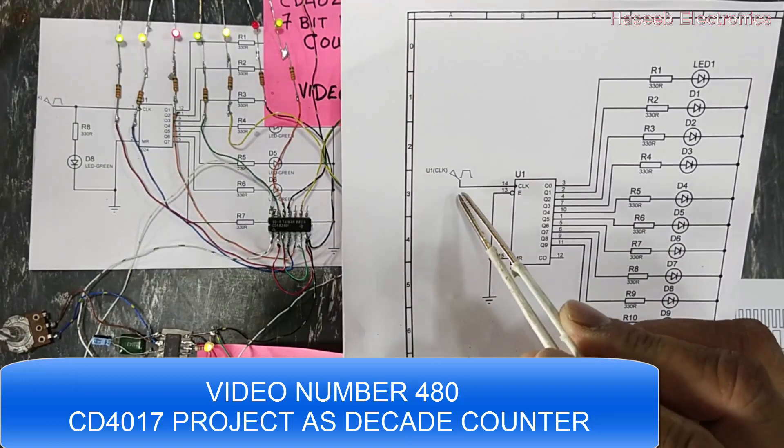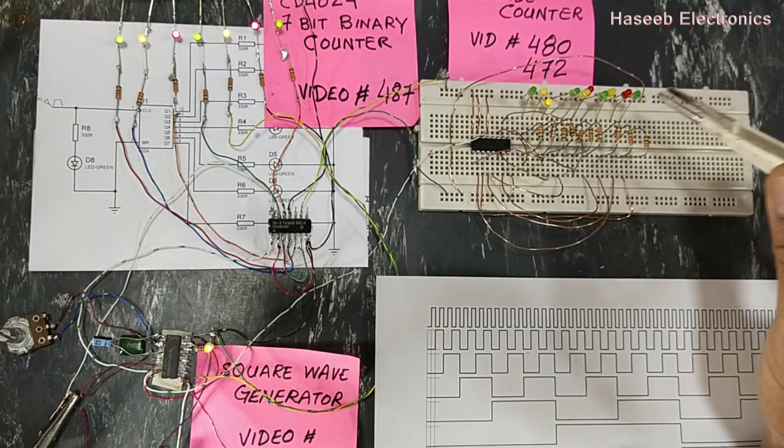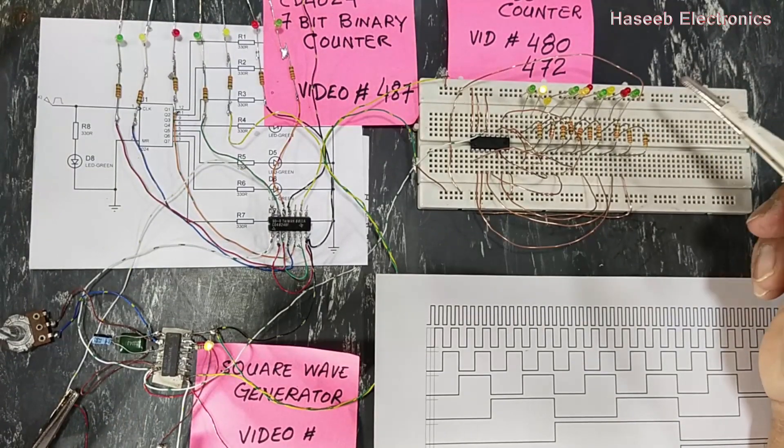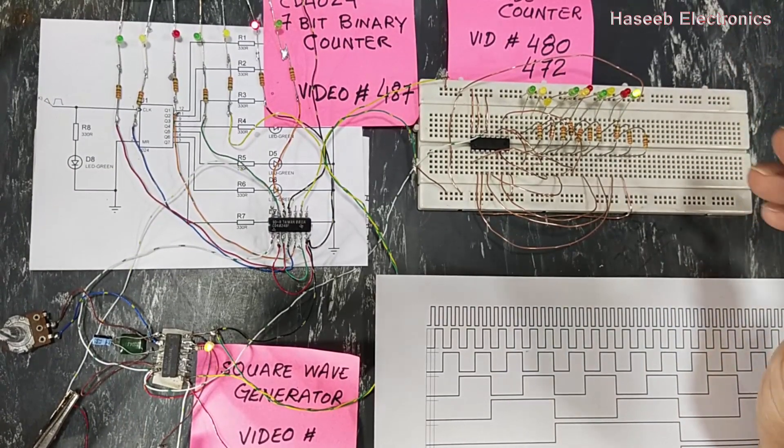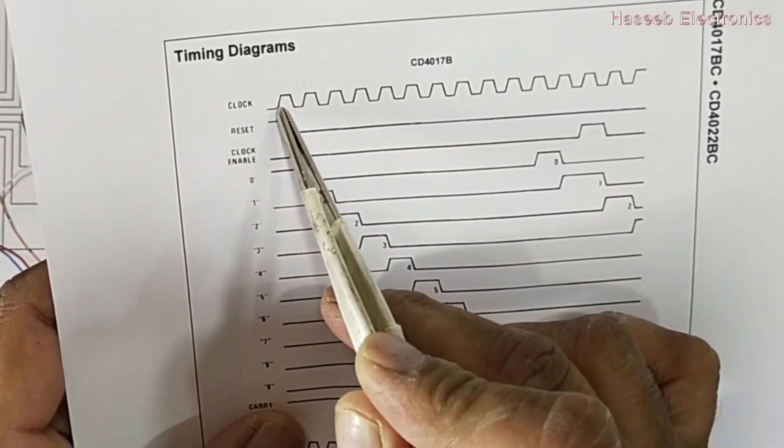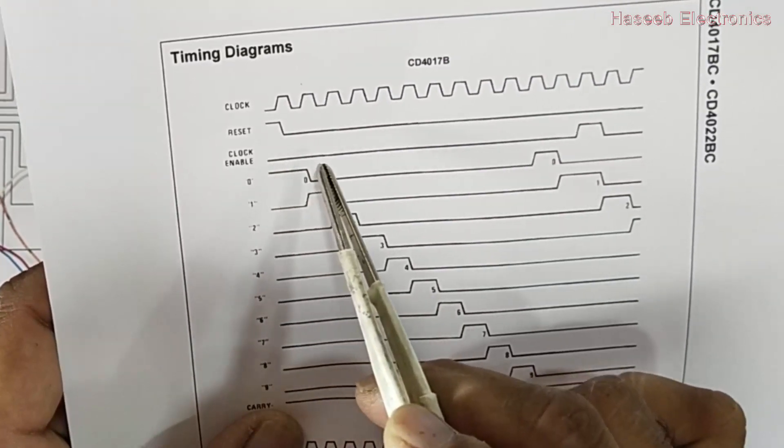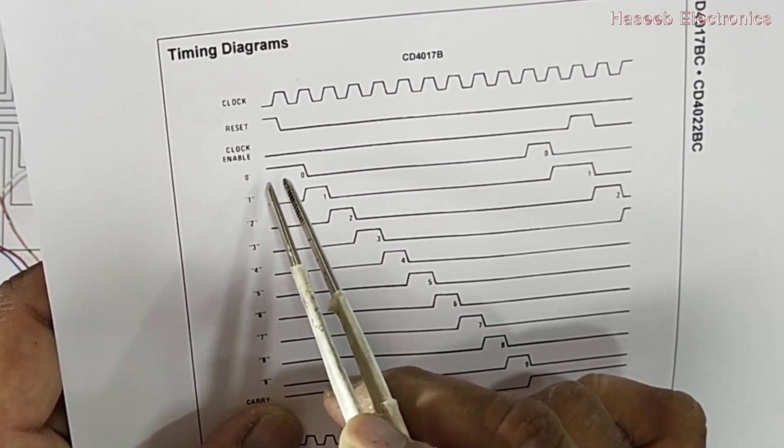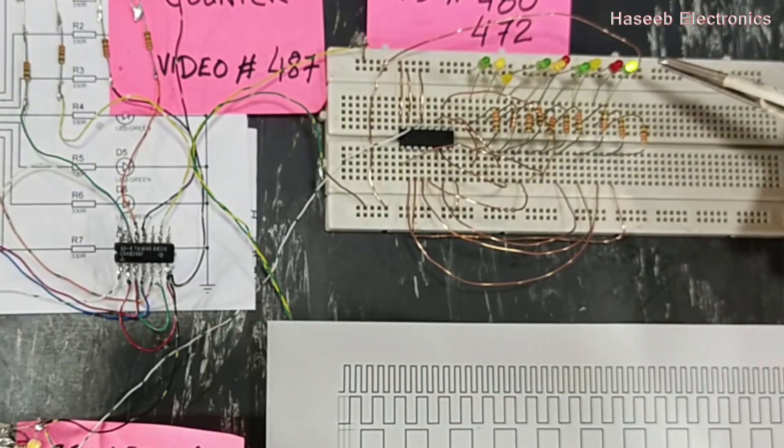It is a 10 stage counter. If we see its timing diagram, these are the clock pulses, the input pulses. If the reset is low and clock enable is low, then at first pulse output number zero will go high.